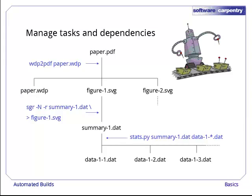Finally, in order to update summary1.dat, we need to run our own little script, stats.py, with all the files named data1 something.dat as input. We don't know in advance how many of these there will be. We could conceivably have dozens or hundreds of raw data files to summarize.